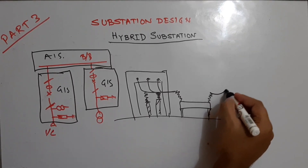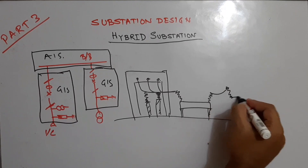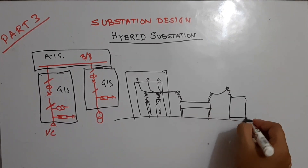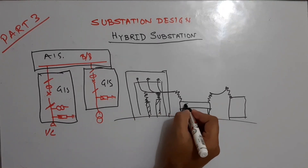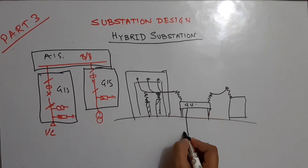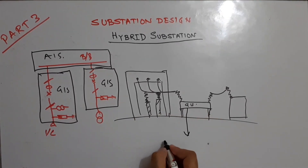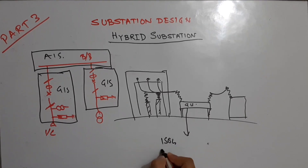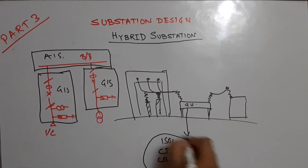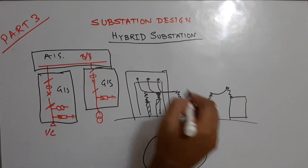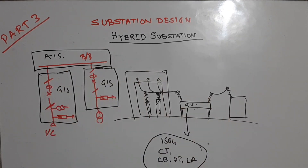From the GIS structure the transformer feeder connects to the transformer. Inside the GIS assembly we have the isolator, CT, circuit breaker, PT, and lightning arrester — all enclosed within the gas insulated switchgear. This is what forms the hybrid substation.